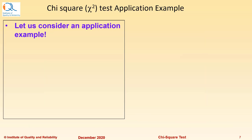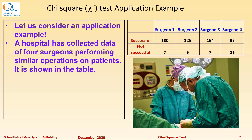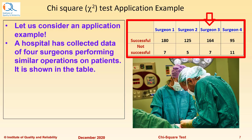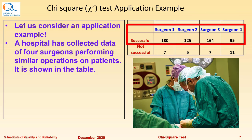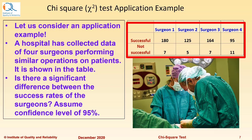Let us consider an application example. A hospital has collected data of four surgeons performing similar operations on patients. It is shown in the table. There are four surgeons and the first row shows the number of successful operations and the second row shows the number of operations which were not successful. The question is, is there a significant difference between the success rates of the surgeons?